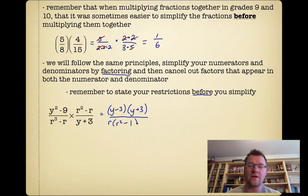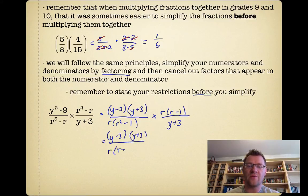The bottom part, we can take out a greatest common factor and get r(r² - 1). Then that's multiplied by—on the top over here we can take out a greatest common factor—r(r - 1). On the bottom we still have y + 3. We can still factor this because that's still a difference of squares. So we have (y - 3)(y + 3) over r(r + 1)(r - 1) multiplied by r(r - 1) over (y + 3).